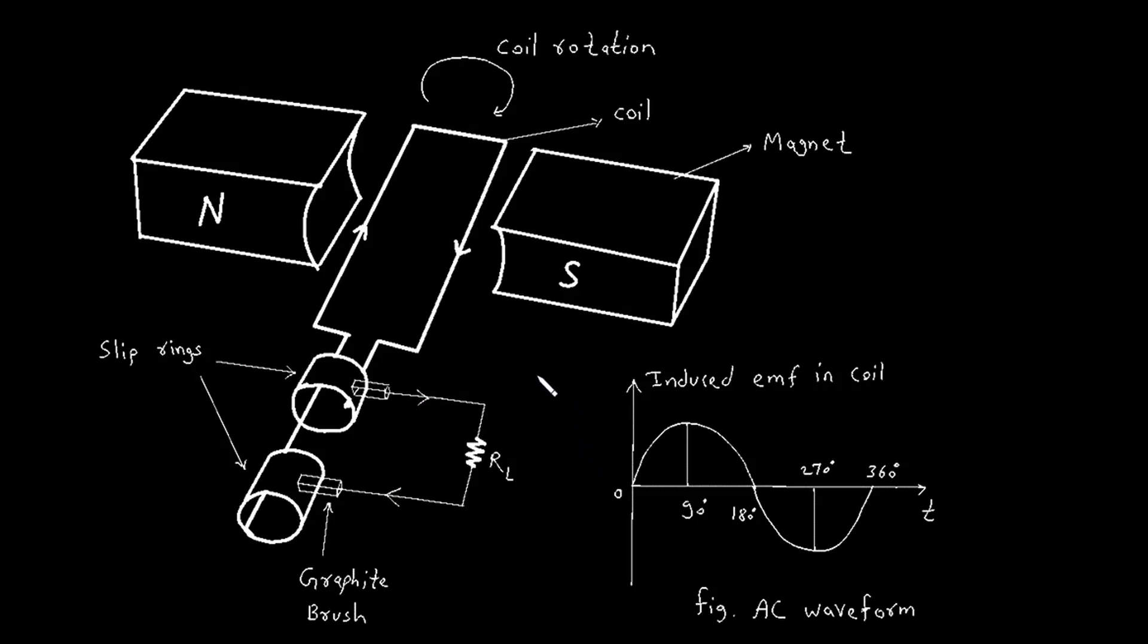Let's start with the basic components of an AC generator. An AC generator consists of the following main parts. First, a magnet. This creates a magnetic field. In our diagram, we have a magnet with two poles, north and south.